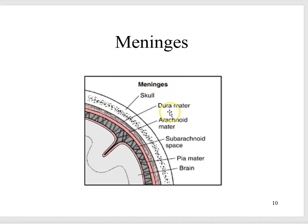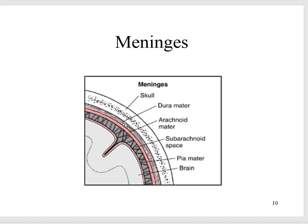These are the meninges — the layers surrounding the brain. You have the pia mater, the arachnoid mater, and the subarachnoid space where the spinal fluid is. The dura mater is much harder and firmer. Those are the three layers surrounding the brain.